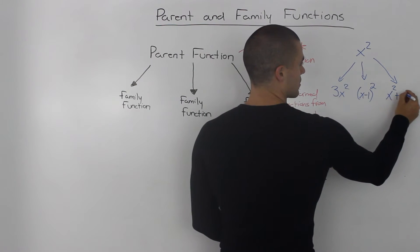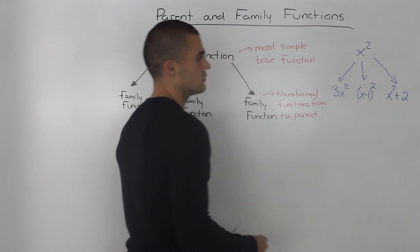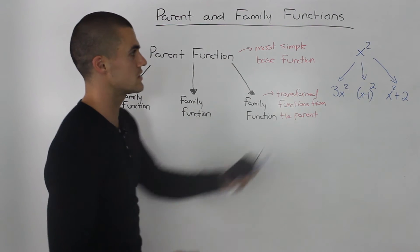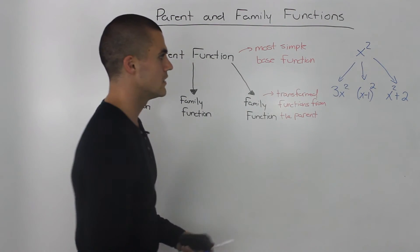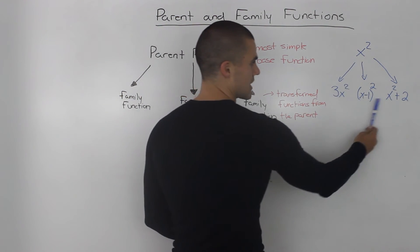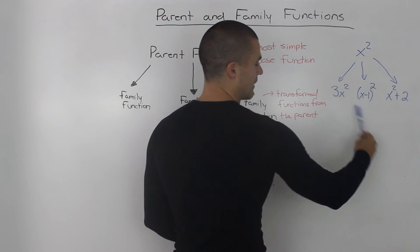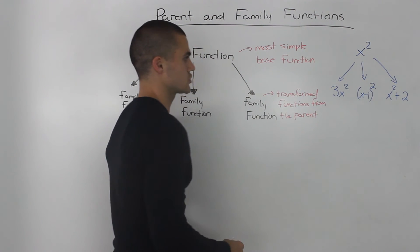We can also translate it up by two units. So there's an infinite amount of things we can do to this parent function x squared. So these are three examples of family functions of that parent function.